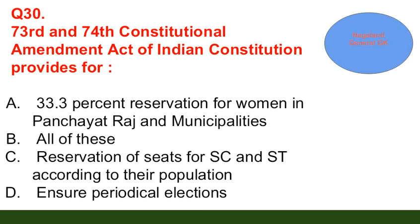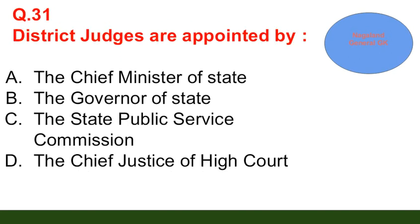Question number 30: The 73rd and 74th Constitutional Amendment Acts of India provide for — option A: 33 percent reservation for women in panchayats; option B: all of these; option C: reservation of seats for SC and ST according to their population; option D: ensuring political elections. The correct answer is option B — all of these.